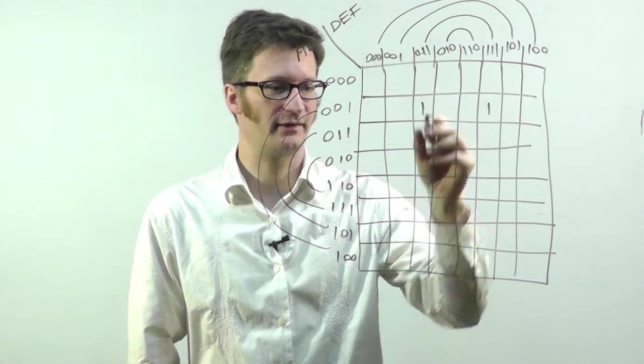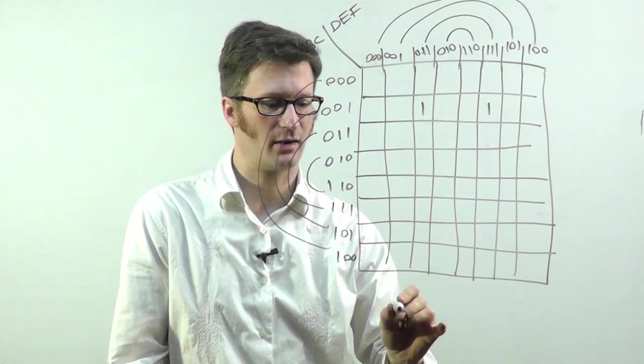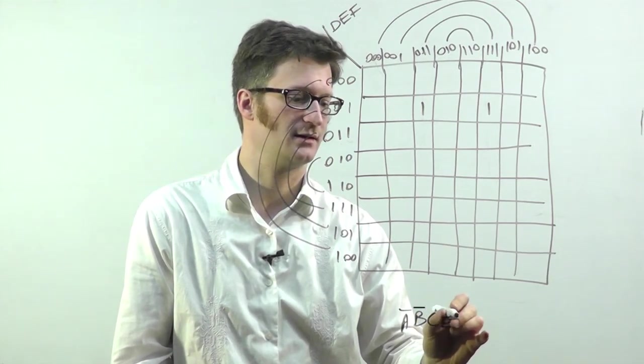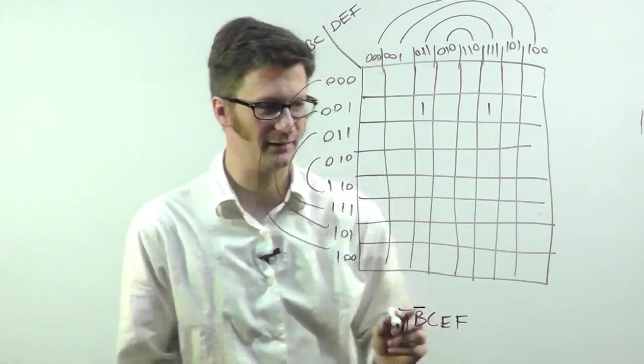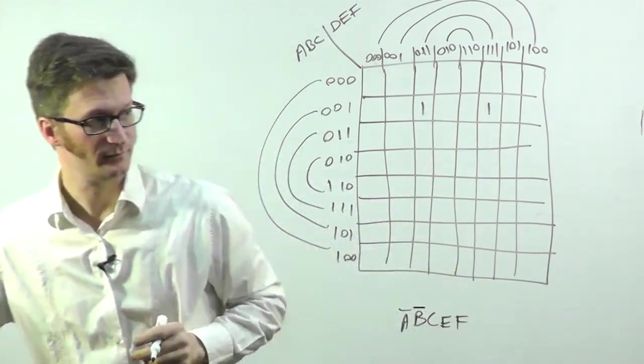That's in common to them. So if I were to label these two, it would be A bar, B bar, C, E, F. That is the minimized term for these ones.